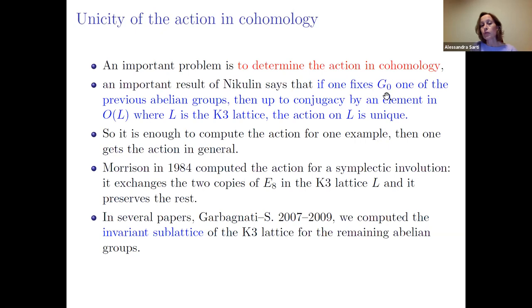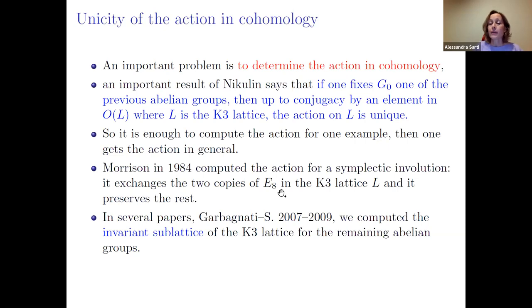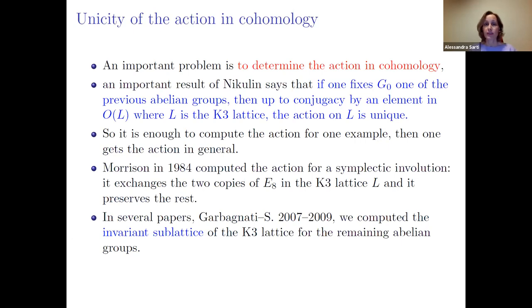This result is not true if you drop the assumption that g₀ is abelian — the action can differ. Morrison in 1984 computed the action for symplectic involutions: it exchanges the two copies of E₈ in the K3 lattice (which has three copies of U and two copies of E₈) and preserves the rest. We now know this is the action for every symplectic involution.